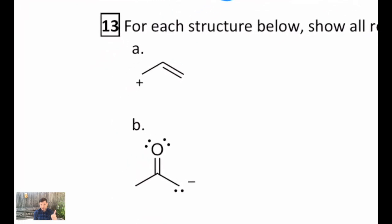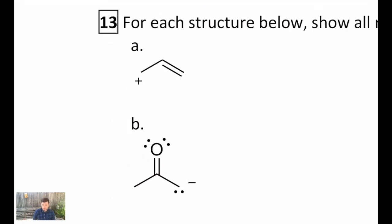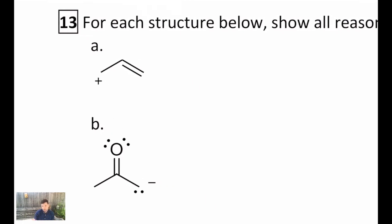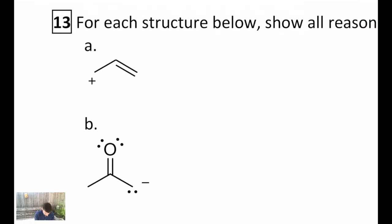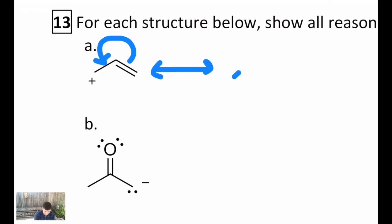Now we're going to wrap up by challenging ourselves to come up with at least one more contributor for these species, where we're only given one contributor to start with. Remember that I can only move pi bonds and lone pairs — those are the only types of electrons that can move. I still need to follow my rules for bonding to satisfy the octet, especially for small non-metals, and I'm going to try to minimize charges, but the overall charge at the end must match the beginning. For the first one, there's only one electron movement I can do: pi bond to pi bond. I'll draw an arrow from the middle of the pi bond on the right showing it becoming a pi bond on the left, separating contributors with that double-headed arrow. When I redraw this, I now have that contributor.